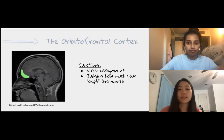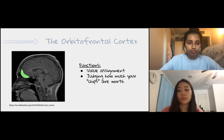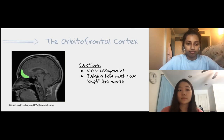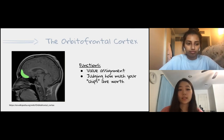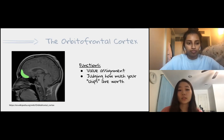The final region related to theory of mind is the orbitofrontal cortex, which is involved with value assignment — for example, helping you decide how much you would pay for something offered to you, like poker chips. This part of the brain activates when you're comparing values of different items. Damage to this region can change how your body responds to emotions, contributing to impulsivity and poor decision making. For example, healthy patients showed physical signs of anxiety such as sweaty palms when making risky decisions, but patients with orbitofrontal cortex damage did not.